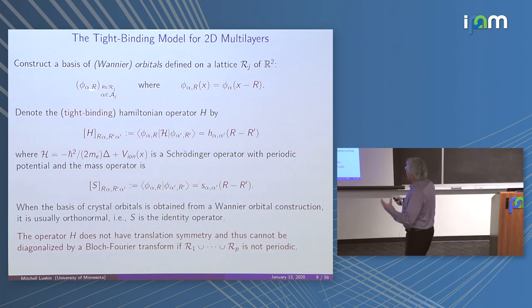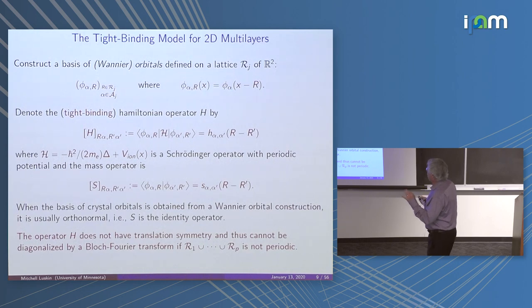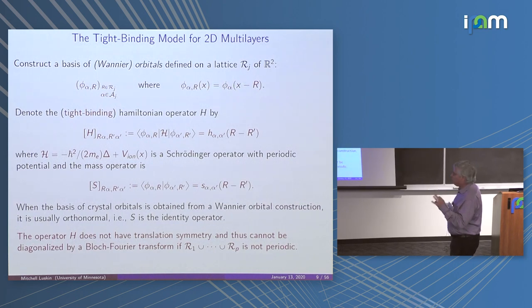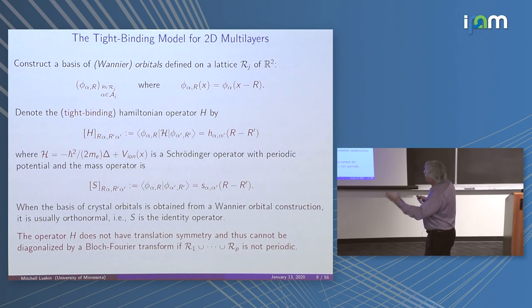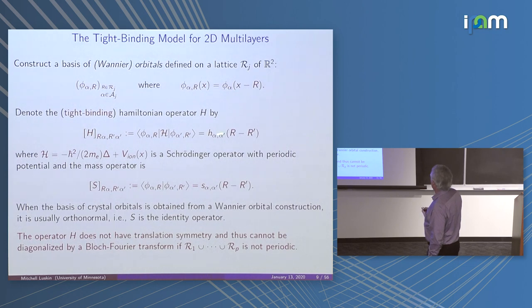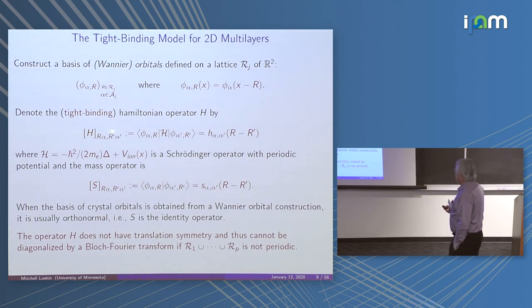For every lattice point and every orbital, we have a Wannier function, and we only need to describe the Wannier function at the origin, then translate them around. In multilayers it's not quite so simple — in a crystal you just translate it around, but here we have to re-evaluate at every point depending on where we are. We have these Wannier orbitals at each point, and from that we construct a tight-binding Hamiltonian.